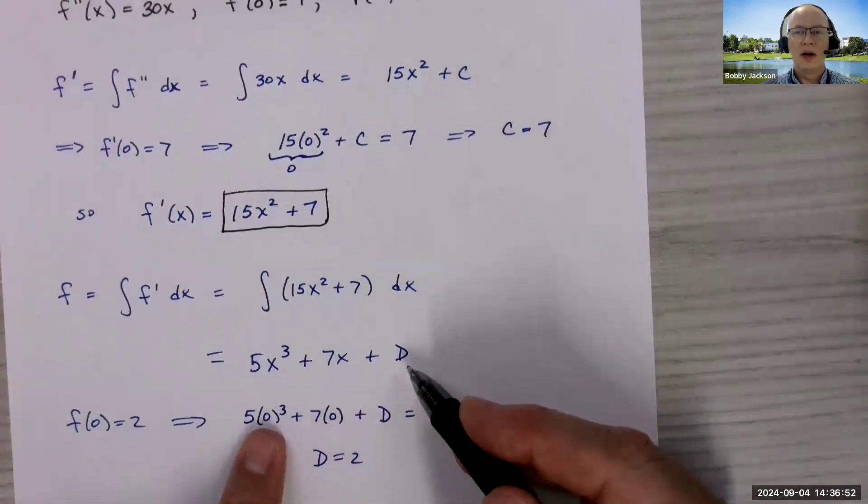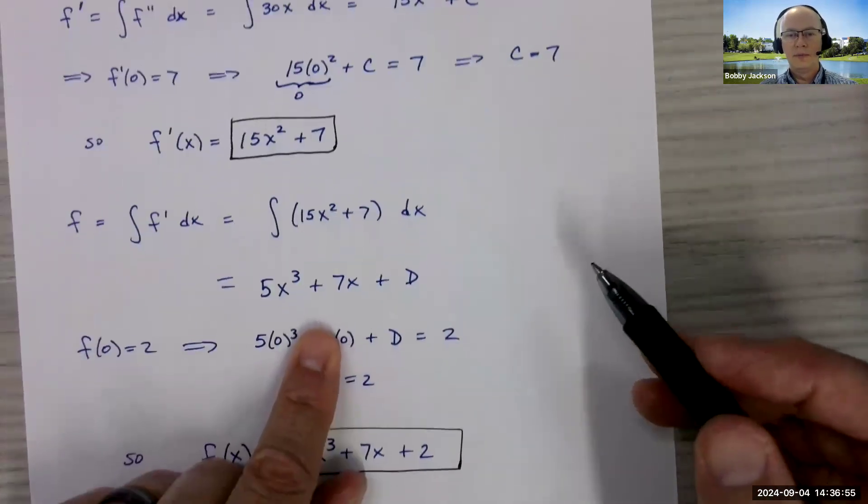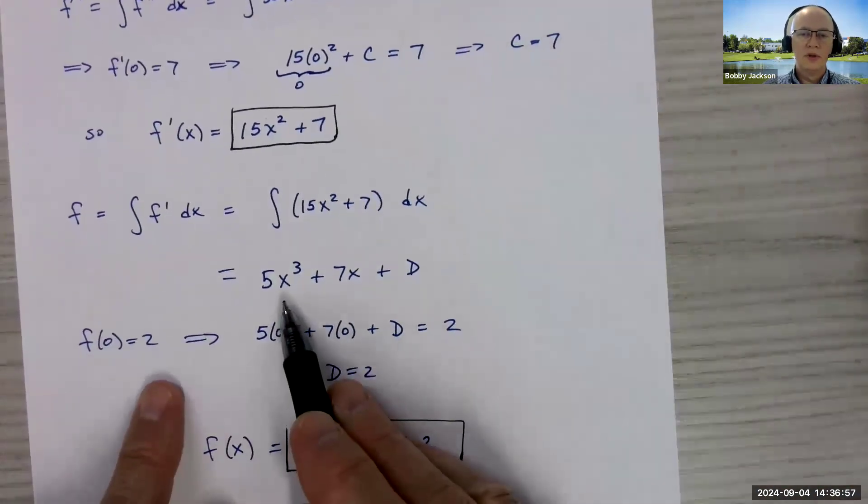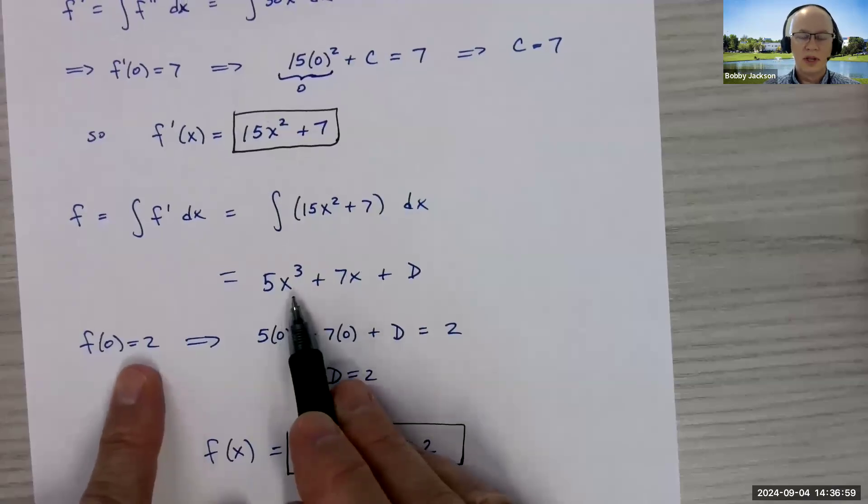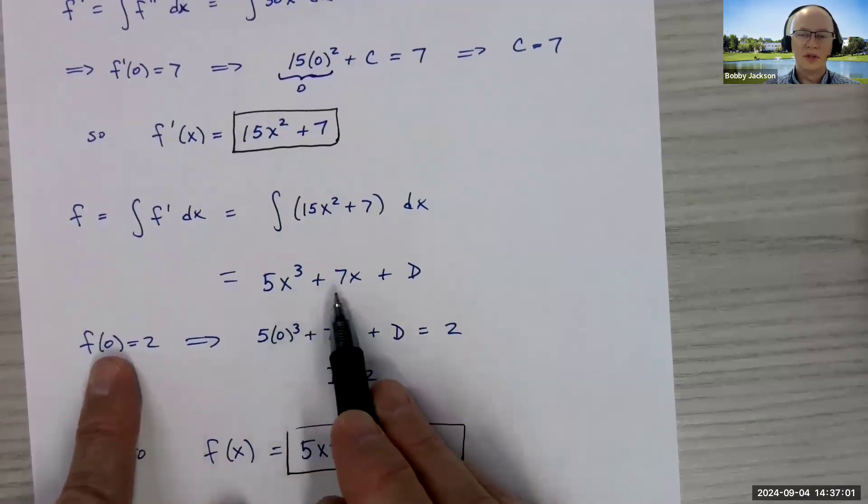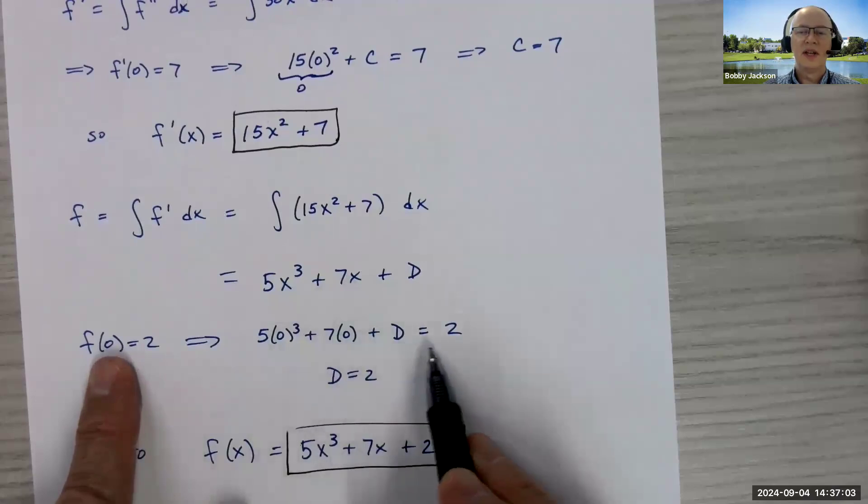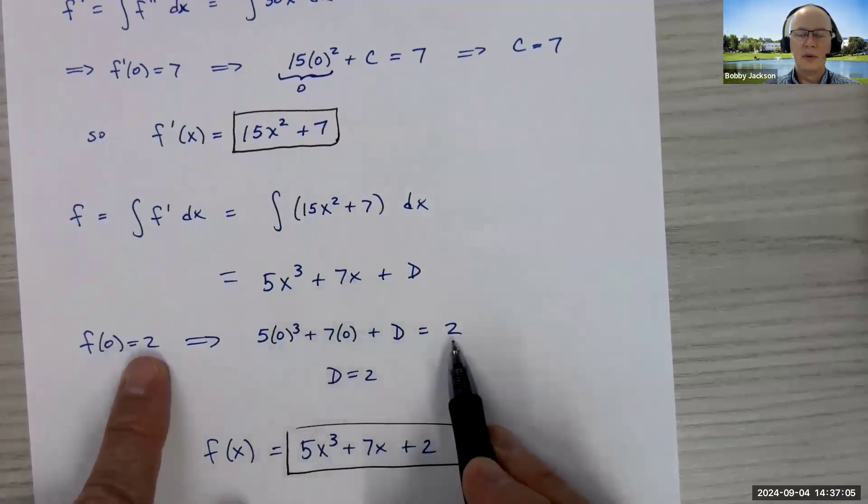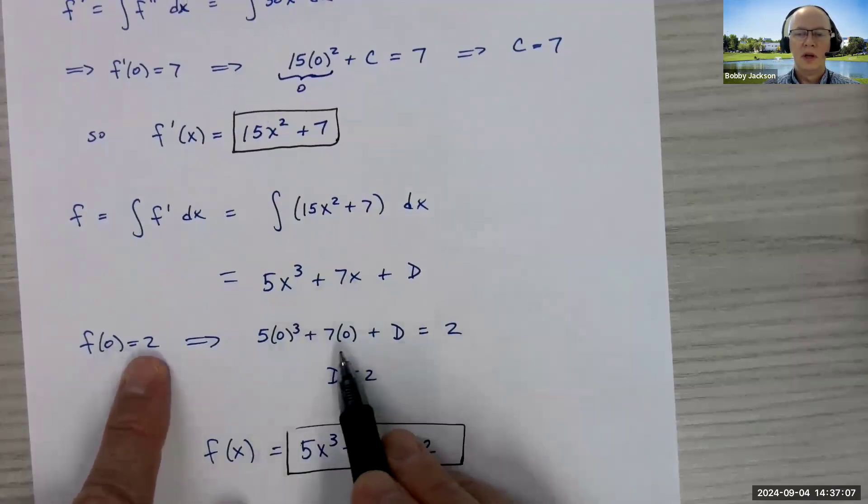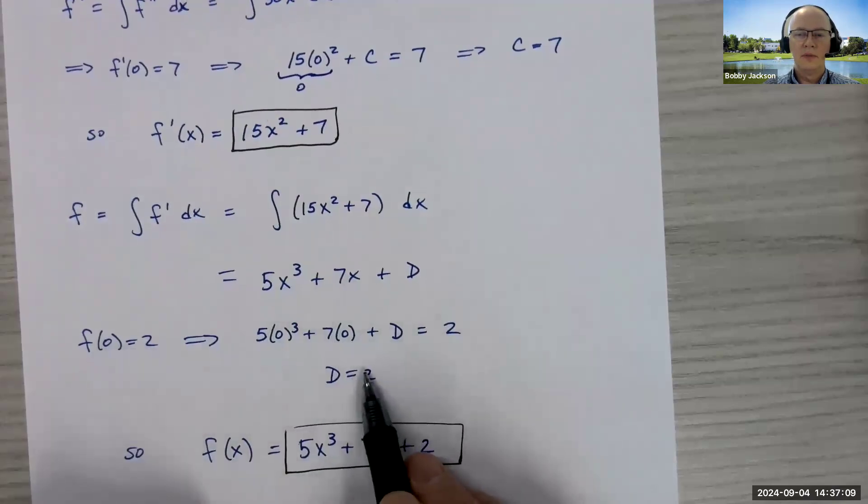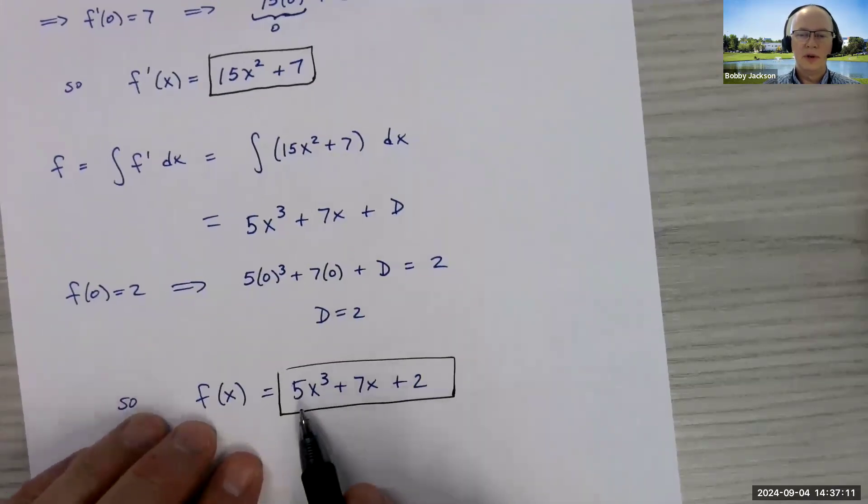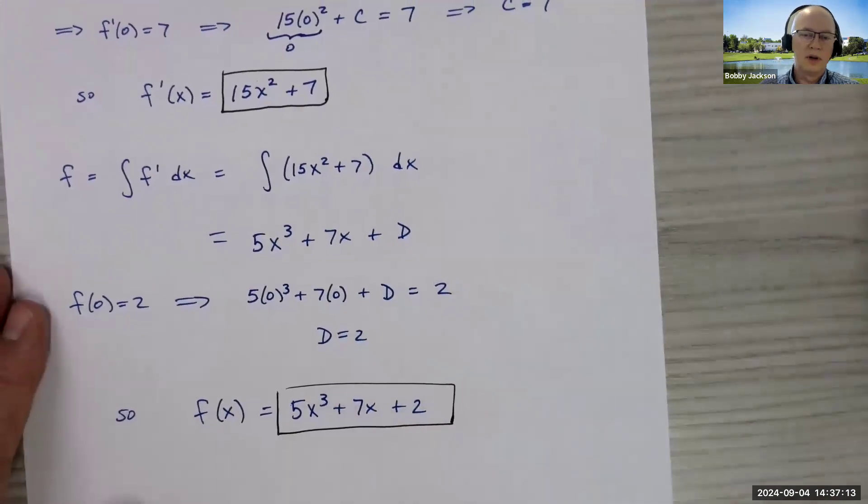So now I apply my initial condition, f of zero is two. Replace x with zero here and set the function equal to two. And of course we get D is two. And so replacing D with two, I get this for my function.